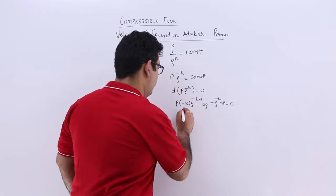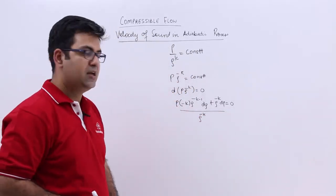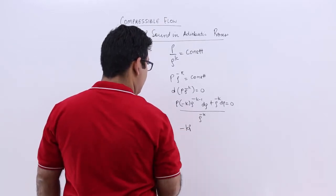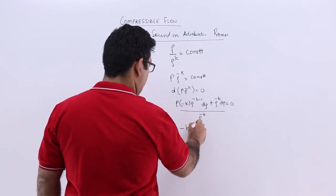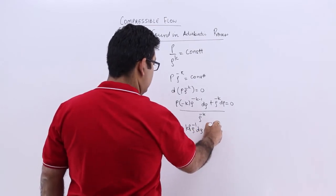Let us divide the entire equation by rho to the power minus k. This would give you minus k times p times rho to the power minus 1 d rho plus dp.